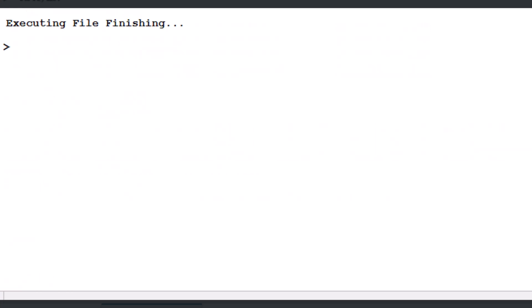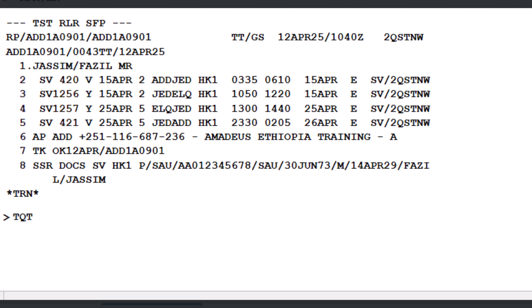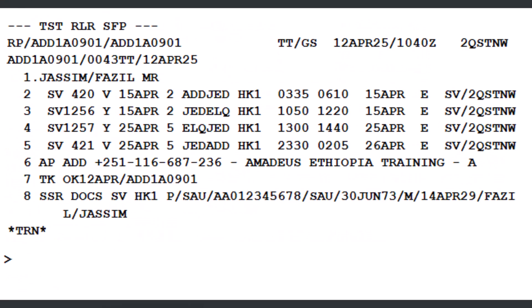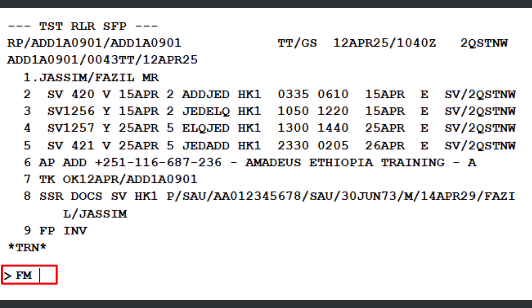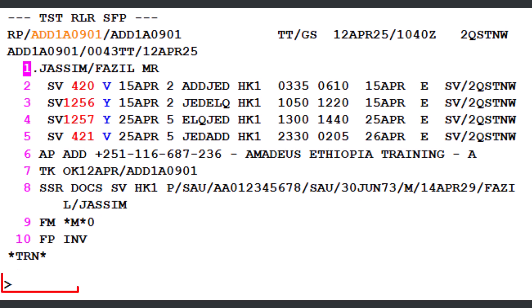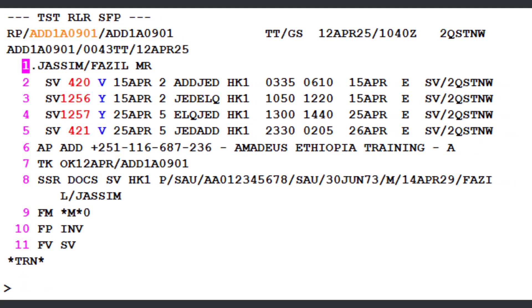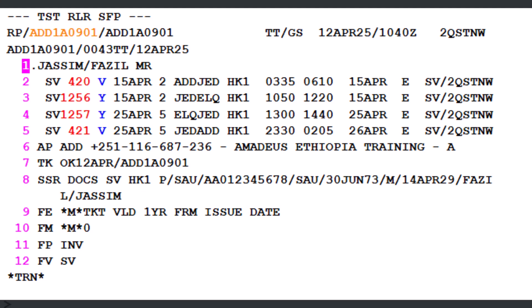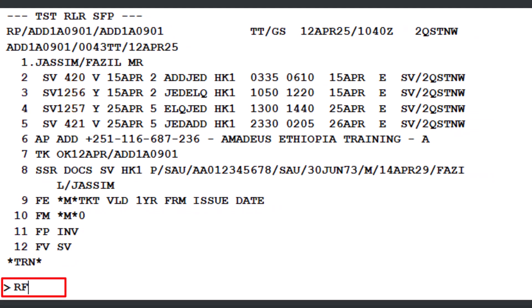Save the updated information in the TST. Before issuing a ticket, it's important to update both the mandatory and optional ticketing elements. To update the form of payment, use the FP transaction, followed by INV to indicate invoice as the payment type. Press Enter. To enter the commission, use the FM transaction followed by zero, indicating zero commission. Press Enter. To set the validating carrier, use the FV transaction followed by SV, the airline code for Saudi Airlines. Press Enter. To add the endorsement, use the FE transaction followed by the free flow text as advised by the airline. Press Enter. These updates ensure all ticketing details are correctly set before issuing the ticket. Save the ticketing elements in the PNR to issue the ticket.